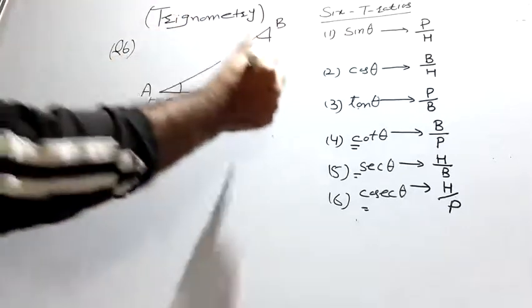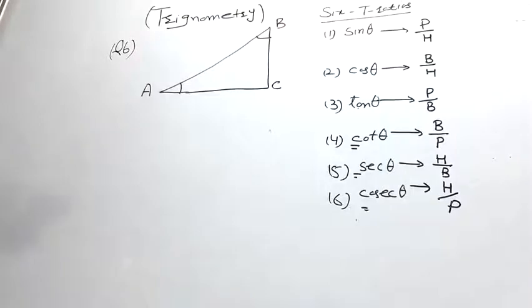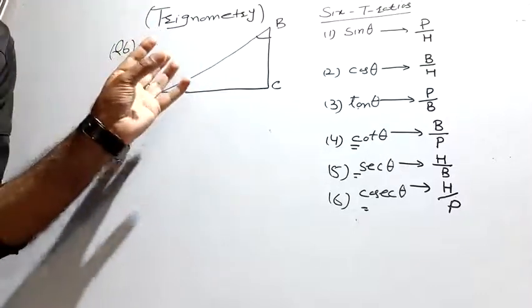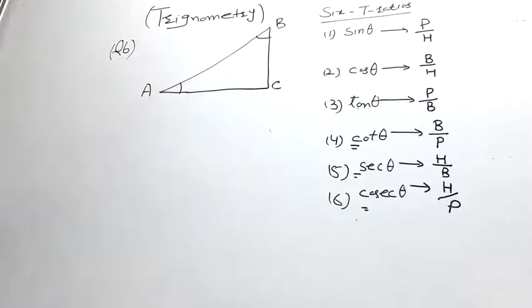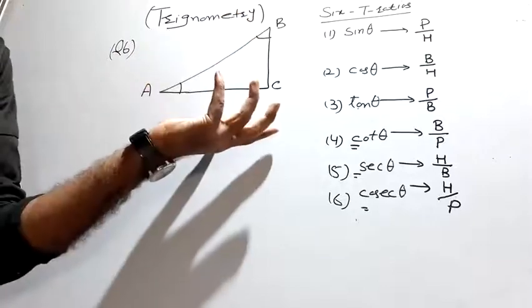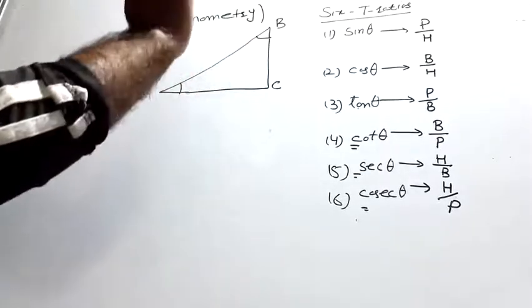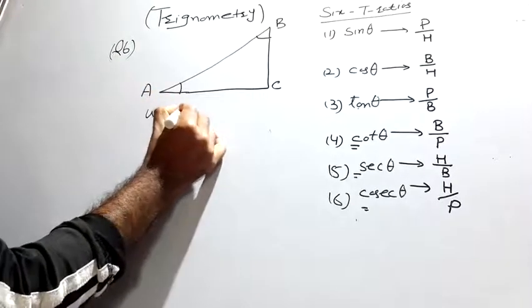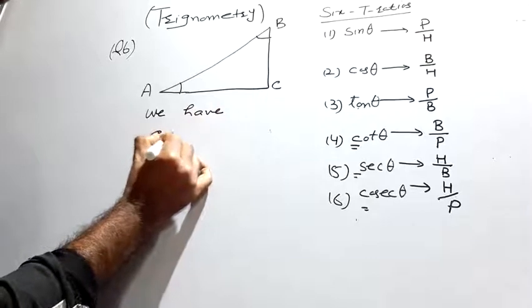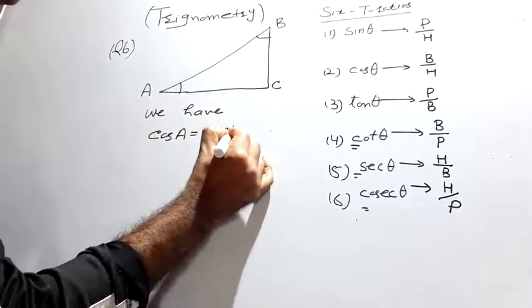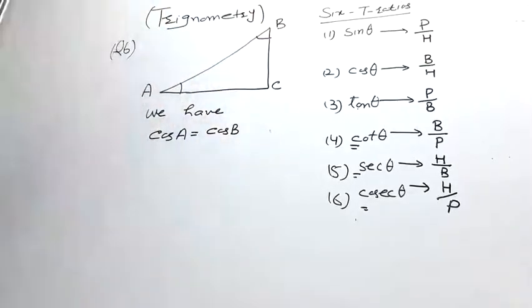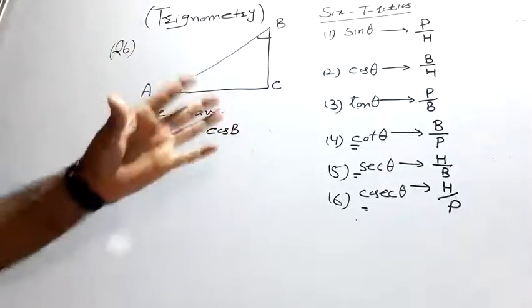So both A and B are acute angles. In a right triangle ABC, with a right angle at C, it is given that angle A and angle B are acute angles. It is also given that cos A is equal to cos B. We have to show that angle A is equal to angle B.